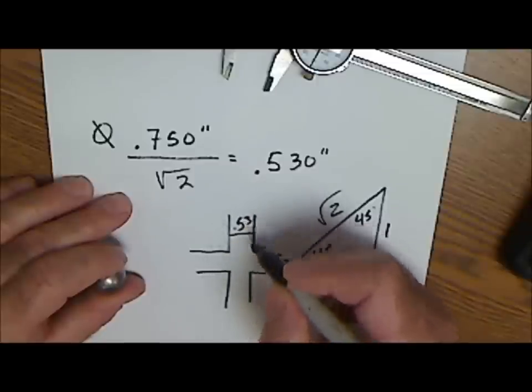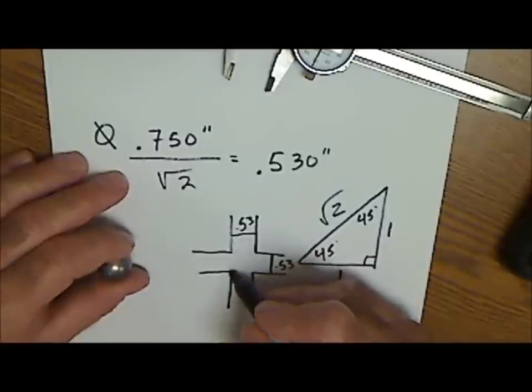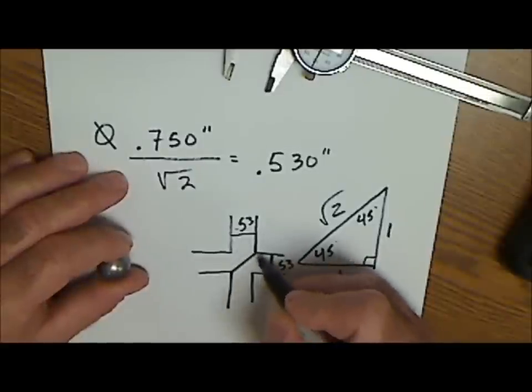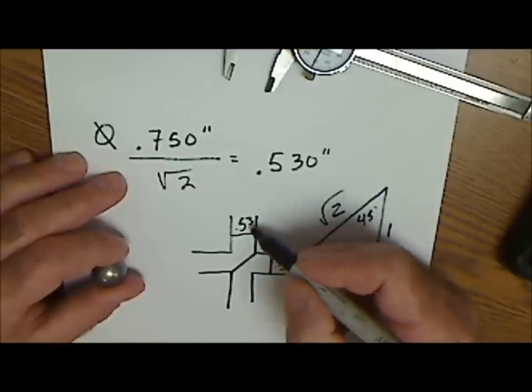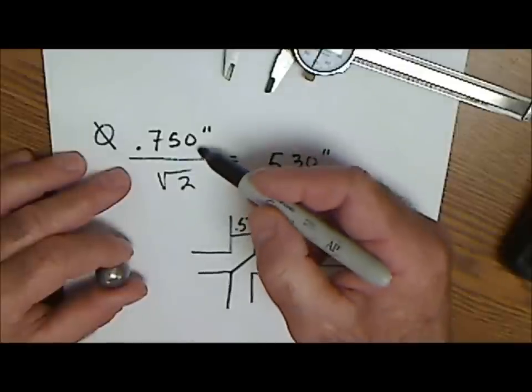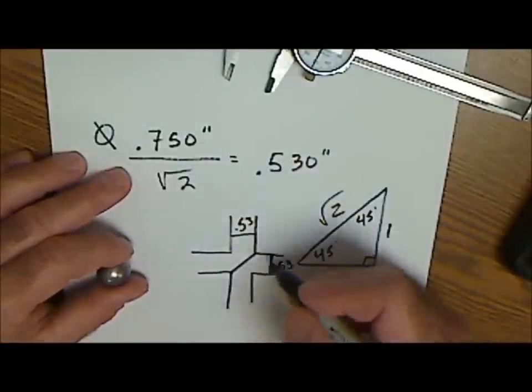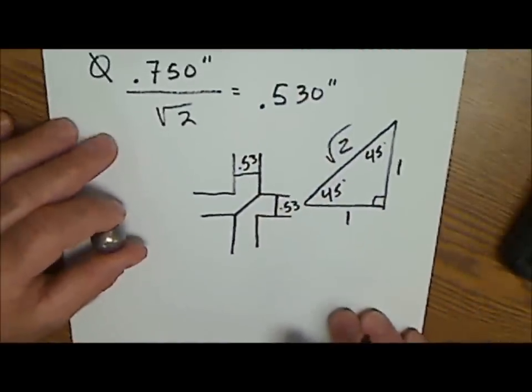So if I did 0.53 squared plus 0.53 squared, I get 0.750 squared. Kind of cool use of the isosceles right triangle.